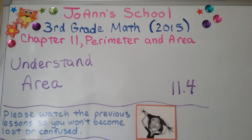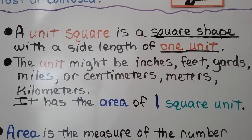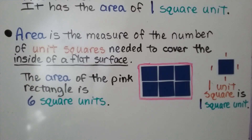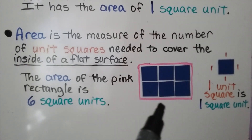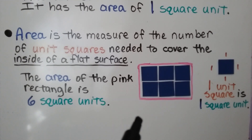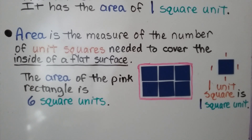Third grade math, lesson 11.4: understand area. A unit square is a square shape with a side length of one unit. The unit might be inches, feet, yards, miles, or metric units like centimeters, meters, or kilometers. It has an area of one square unit. Area is the measure of the number of unit squares needed to cover the inside of a flat surface. The area of this pink rectangle is six square units.